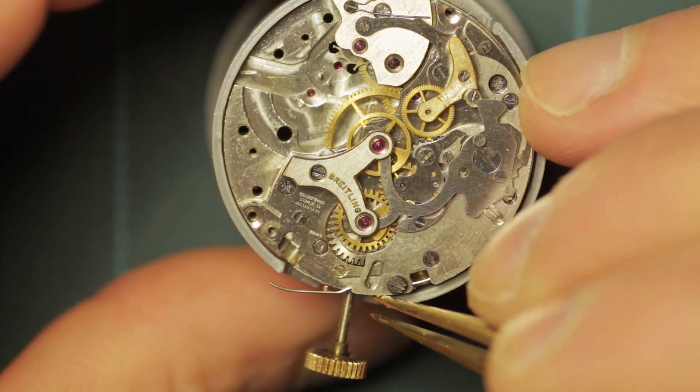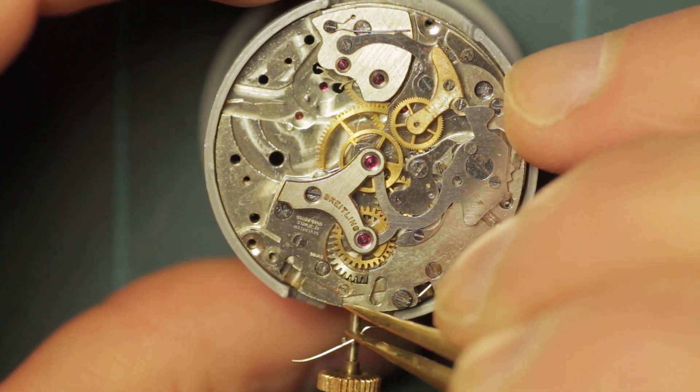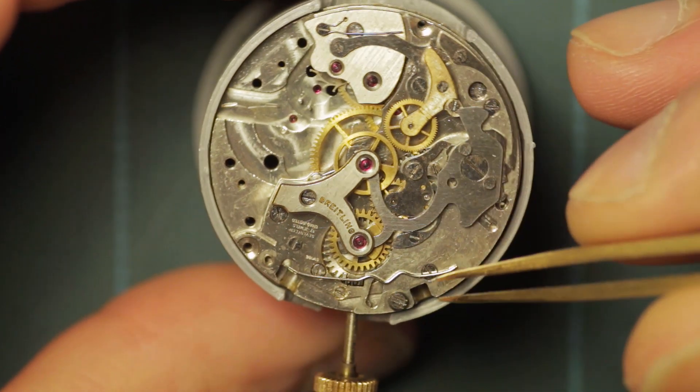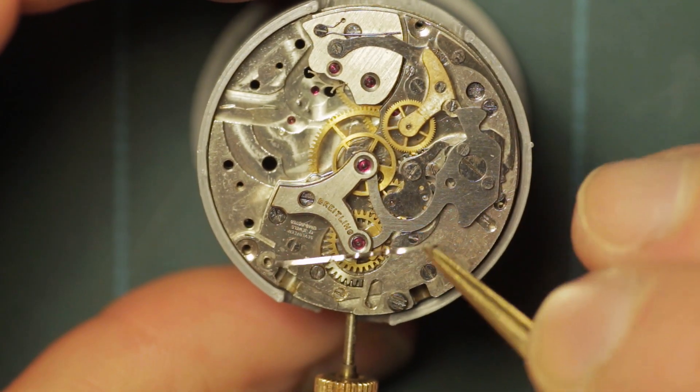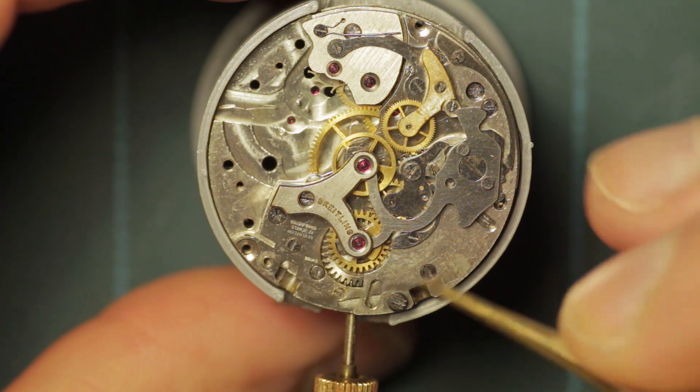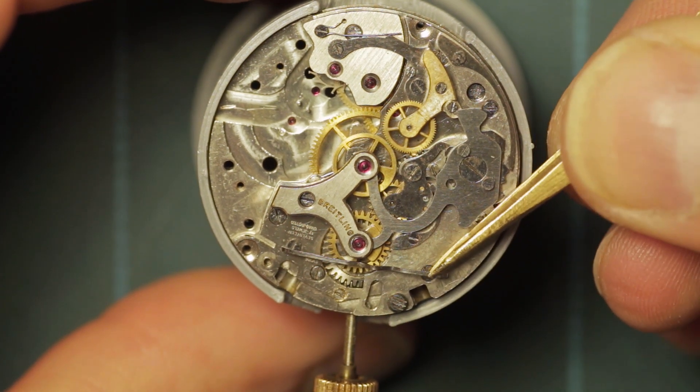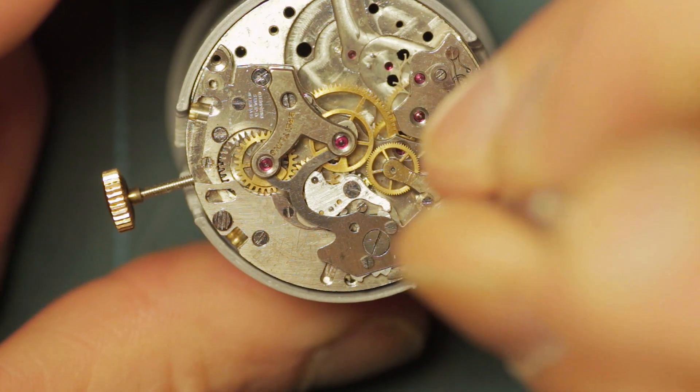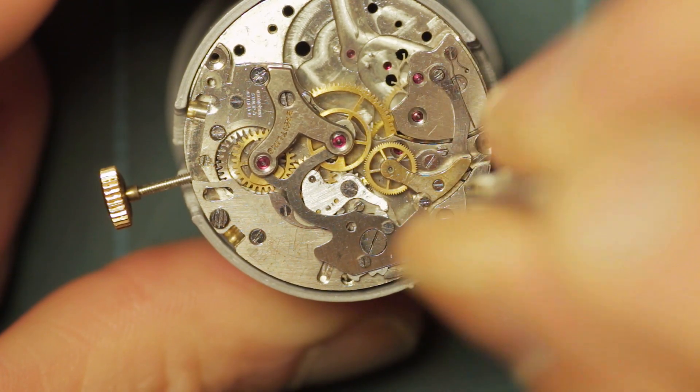Here I'm removing the shaped spring which returns the pushers. As you can see, it's a specific shape and it fits in a specific direction. This just fits into the slot covering both of the chronograph pusher slots.